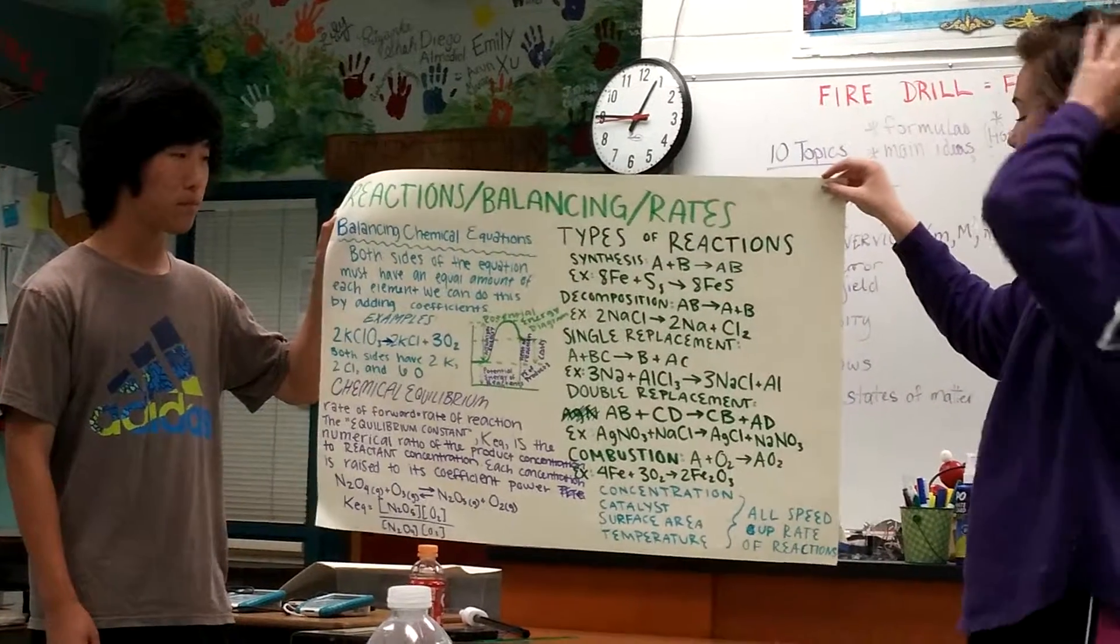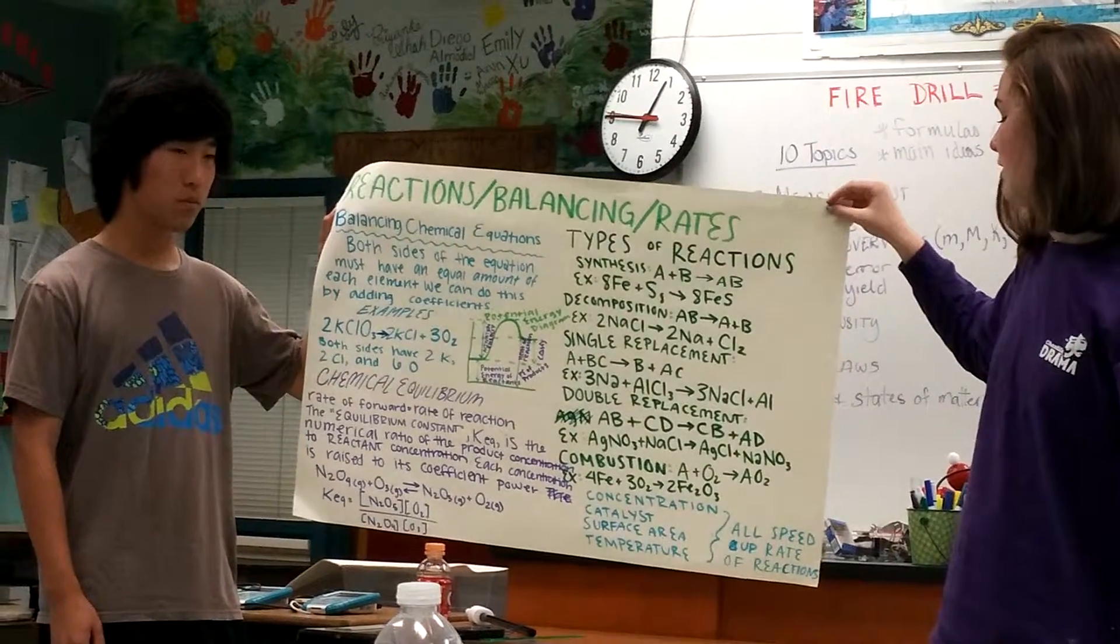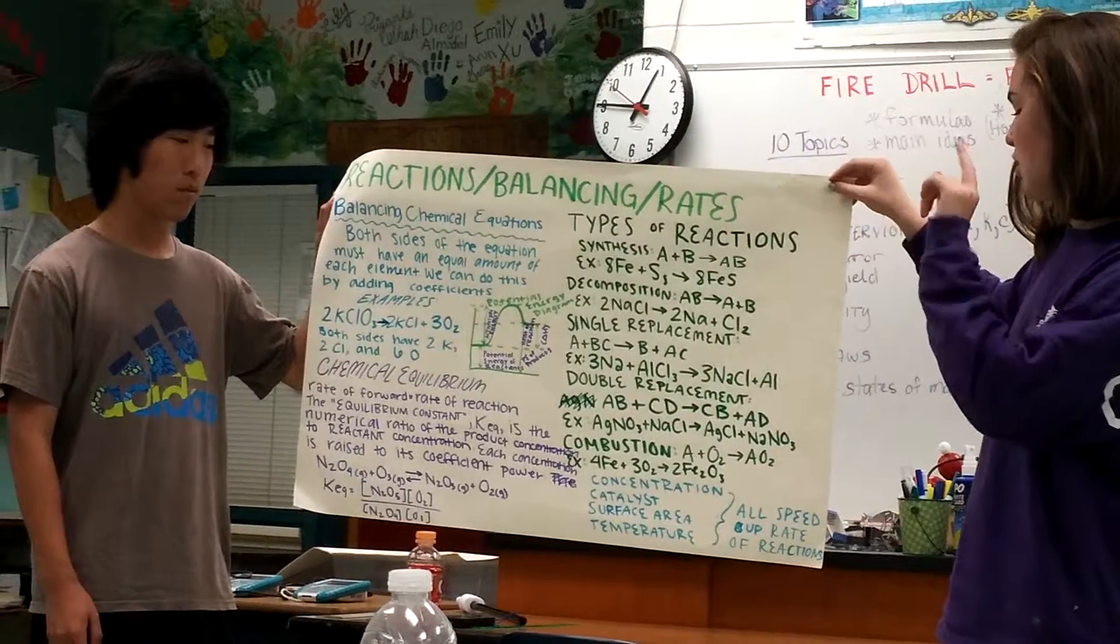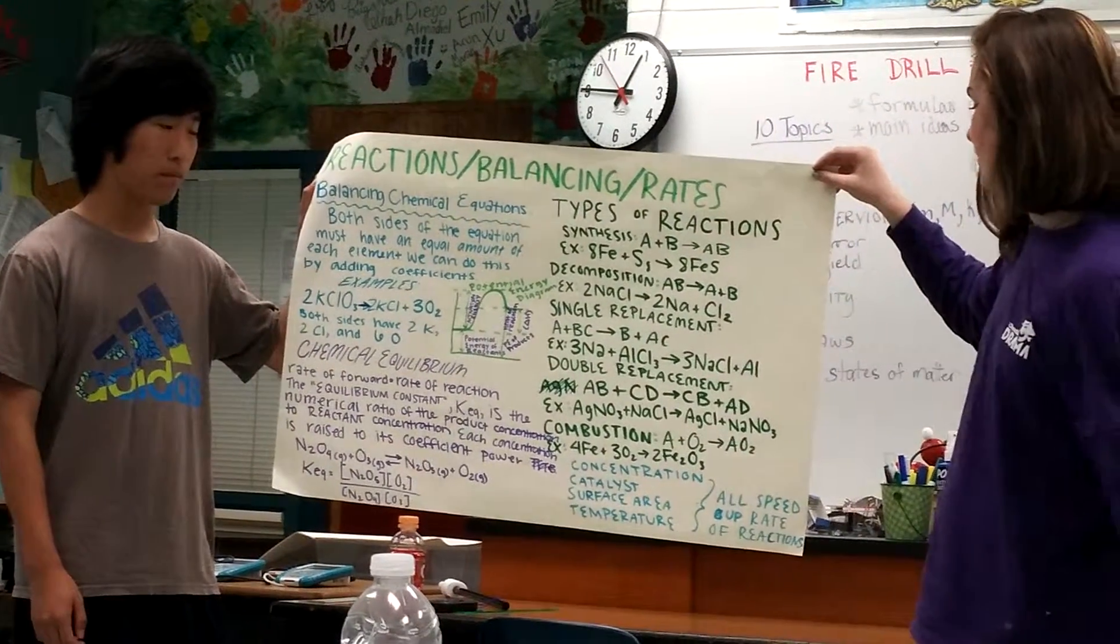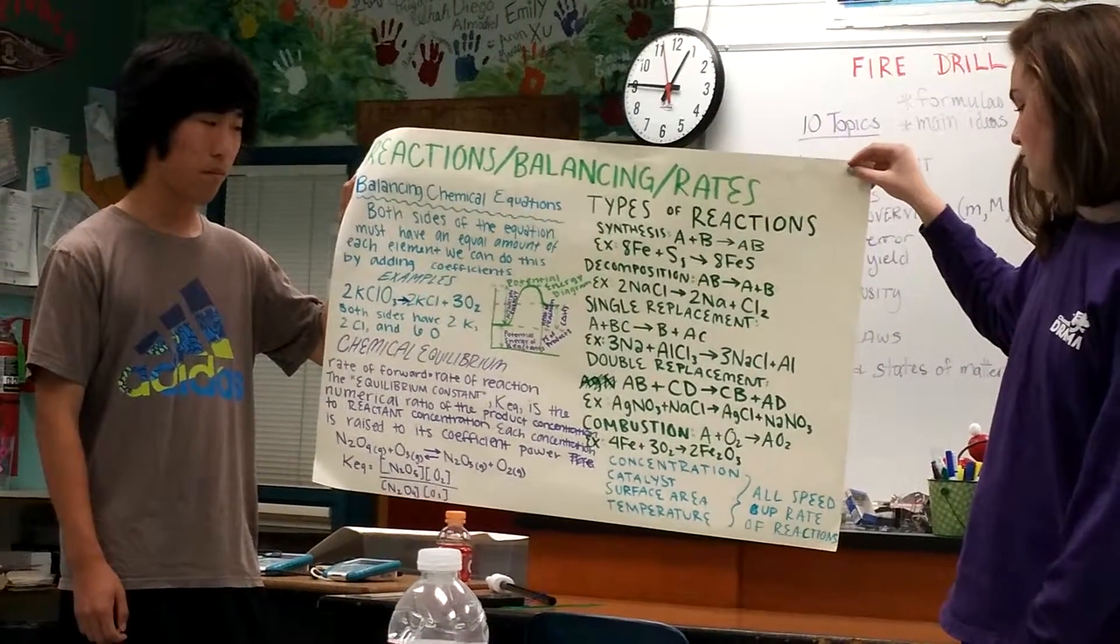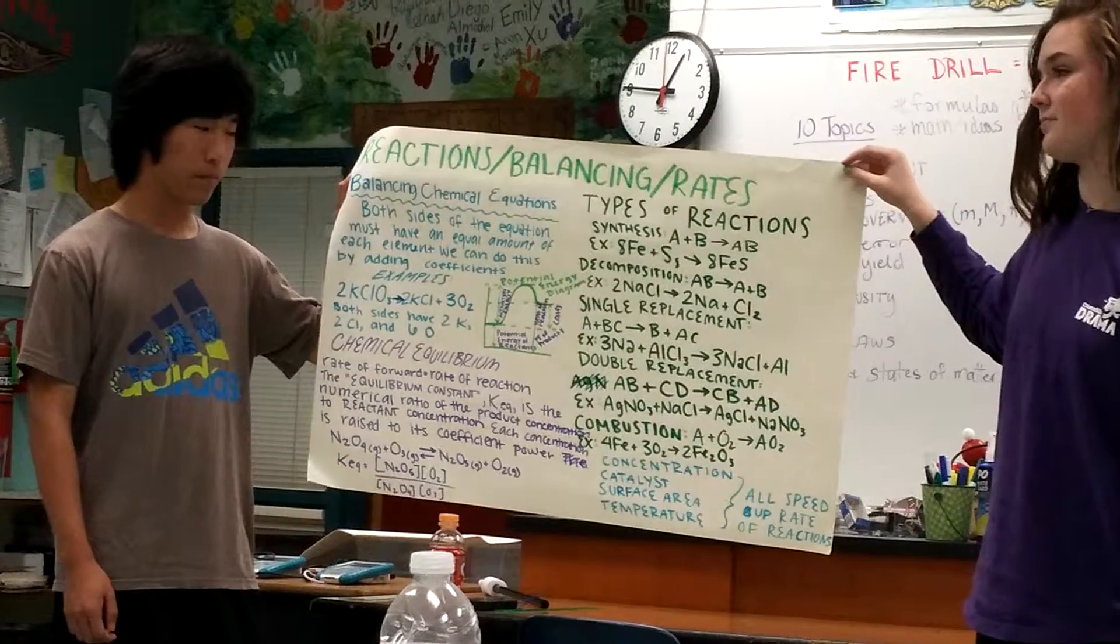And then the last type is combustion, which is when you're combining something with oxygen gas, which is always going to be A plus O2 is AO2. An example of that would be 4 Fe plus 3 O2 is 2 Fe2O3.